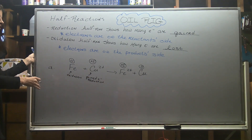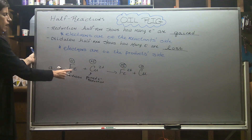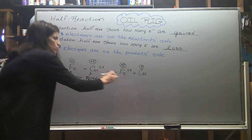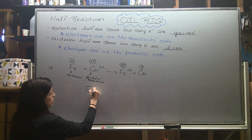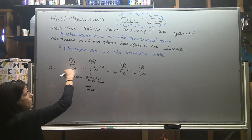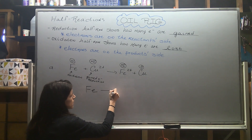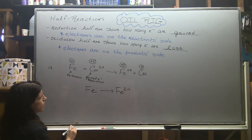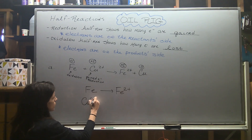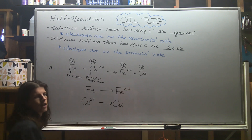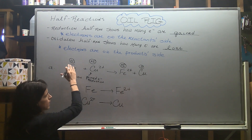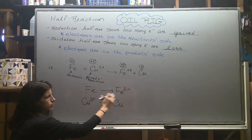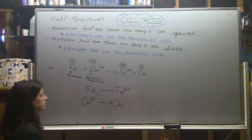Now let's write the half reactions. Since iron underwent oxidation, we expect electrons on the product side. We'll first write out the species: solid iron stays on the left side and turns into iron 2+. For the copper half reaction: Cu²⁺ goes to solid copper. Keep the same elements together on the same sides — iron stays with iron and copper stays with copper when writing your half reactions.